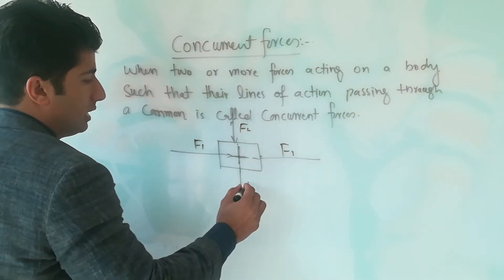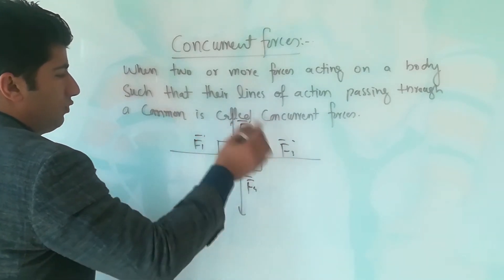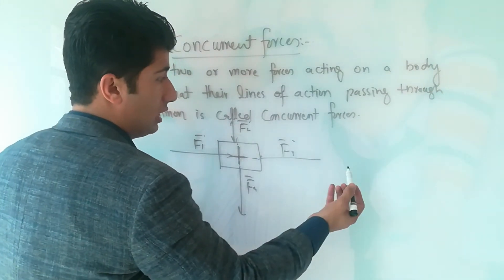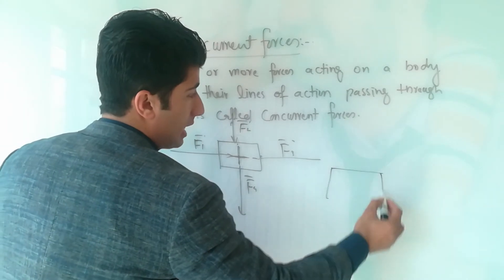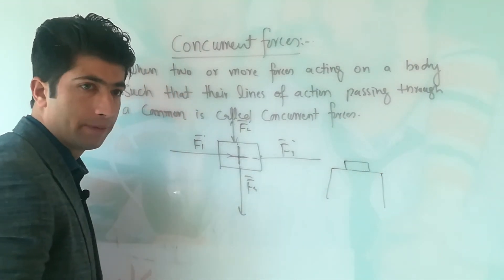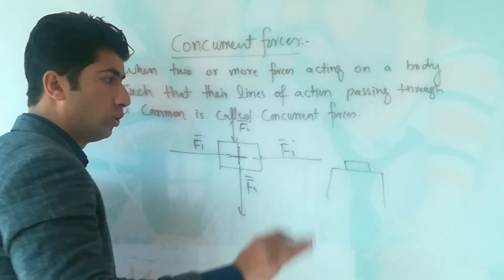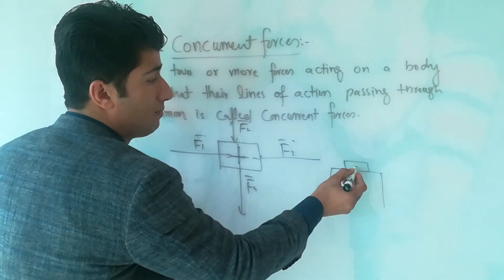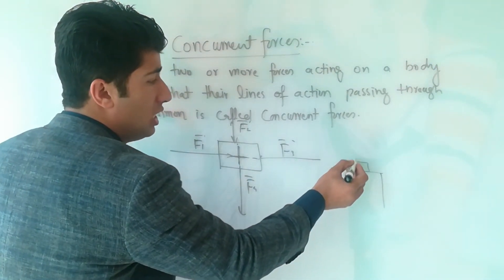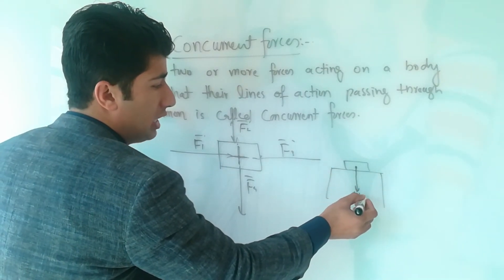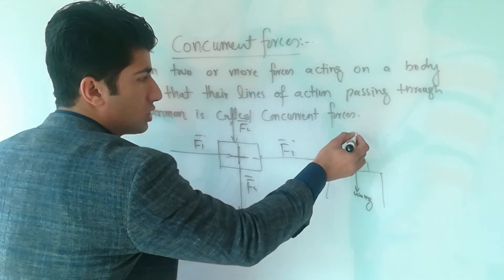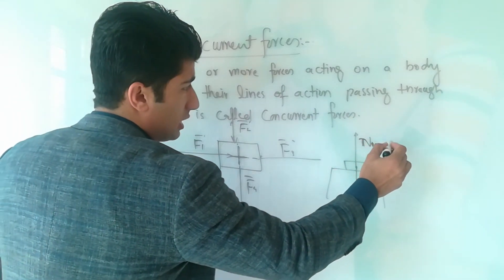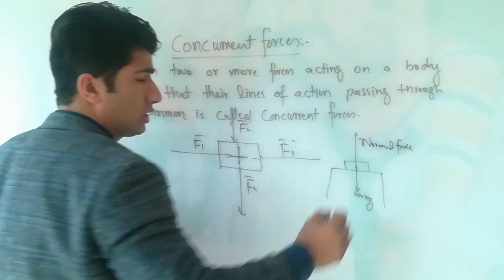Let's say this is f1, this is f2, this is f3, this is f4 — these forces are concurrent forces. Practically, is ka joh example hai, agar aap eek table ko lhe aur is table pa rake eek book ko lhe, to is per dho forces act kerethe hai aur dho no forces ki joh line of action hai woho a common point se pass hoota hai. Joh weight ki force hai that is W = mg, aur joh normal force hai, woho dho no is point se pass hoota hai.